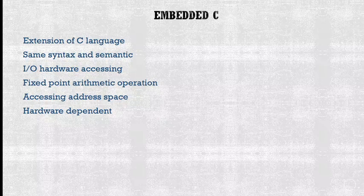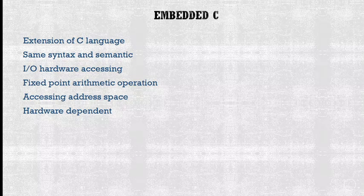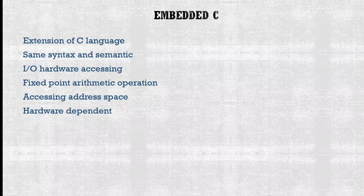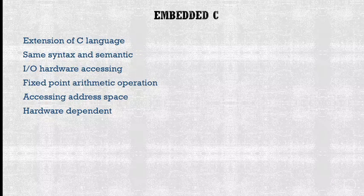In embedded C you have to write syntax to access or manipulate the IO. Embedded C also has fixed point arithmetic operations and you can access memory spaces like RAM. Lastly, embedded C is a fully hardware-dependent language and OS-independent, meaning formatting settings depend on the type of microcontroller we use.